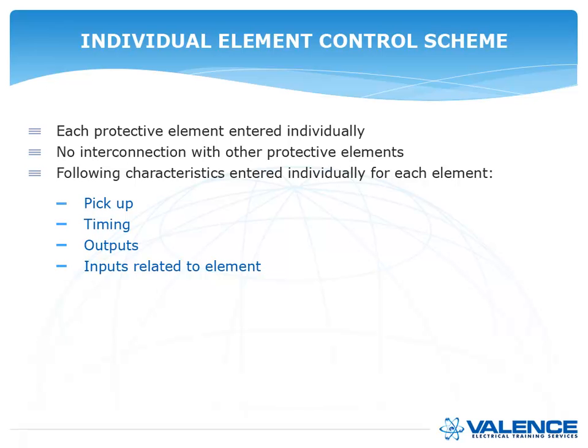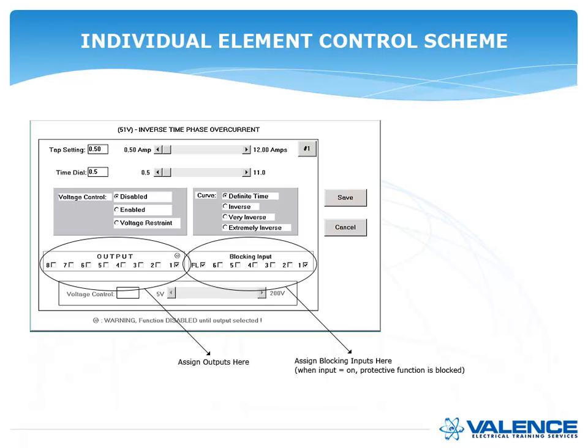And here is from a Beckwith relay. This is an individual element control scheme. You can see on the top, you type in the tap setting, you type in a time dial. You select what kind of voltage control you're going to use. You choose your curve, and then you put a checkbox in every output that will turn on when this element turns on. And then if you want to block it with anything, then you just look at the blocking input. So in this case, if input 1 operates, this element will be blocked, or if the fuse loss, which is what that FL stands for, then this element will be blocked.